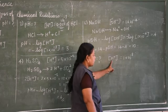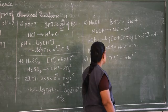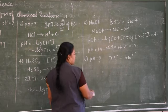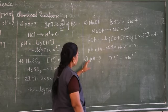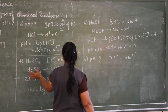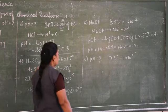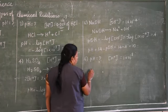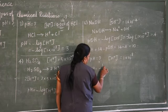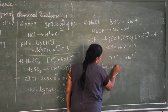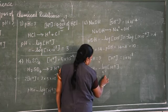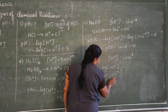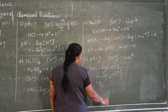Sixth problem: hydrogen ion concentration is given as 1 × 10⁻⁸. Find the pH. Since the acid name is not mentioned, we directly substitute: pH = -log(1 × 10⁻⁸) = 8. The pH value is 8.